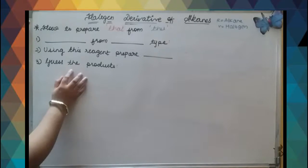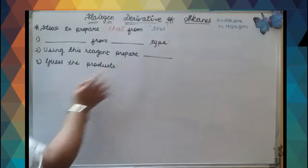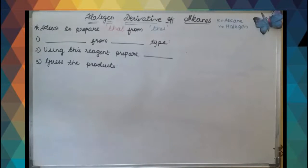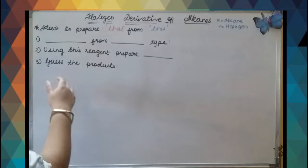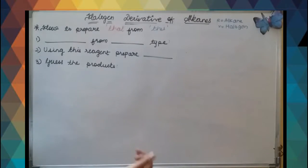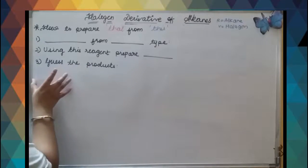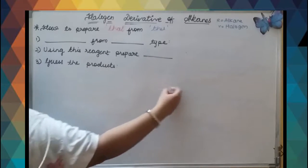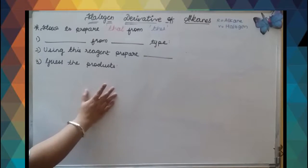So don't worry. First is 'dash from dash' type - you have to prepare, suppose, alkyl halide from ethane. Using this reagent, prepare this - you are given a reagent and you have to get a product. Second type is guess the product - you will be given a formula and you have to guess the product, you will only be given the reactant part. Let us move on and see some examples.